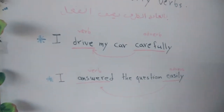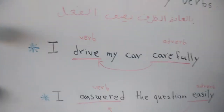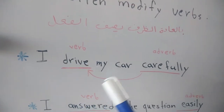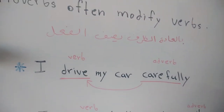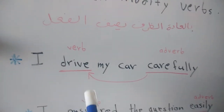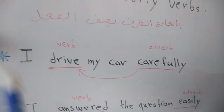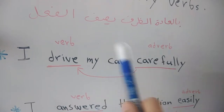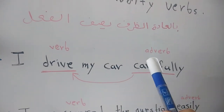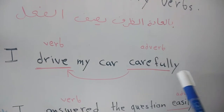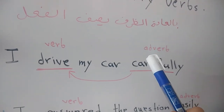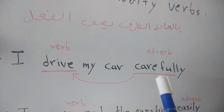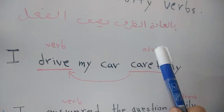Let's look at these sentences. Look at the first sentence: 'I drive my car carefully.' أنا أقود سيارتي بحذر. وين الفرب هون؟ I هو ضمير، drive هو الفعل، my car هو اسم، وكلمة carefully هي الـ adverb.